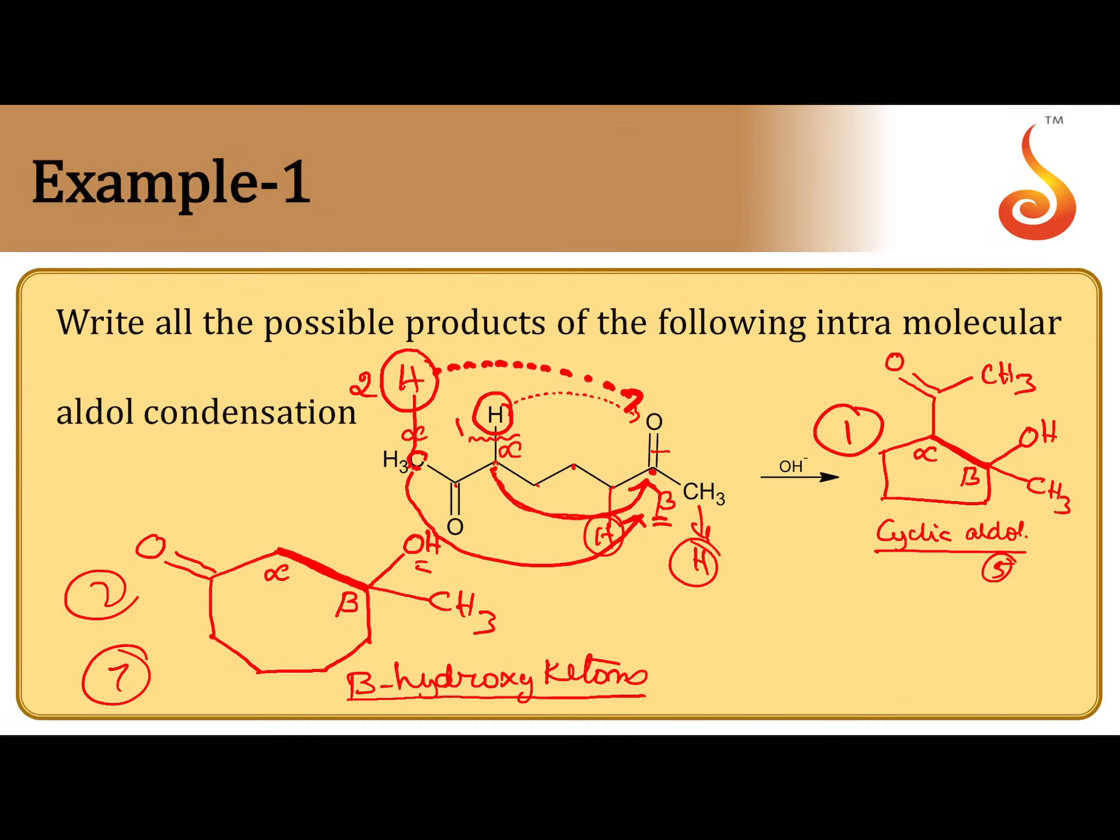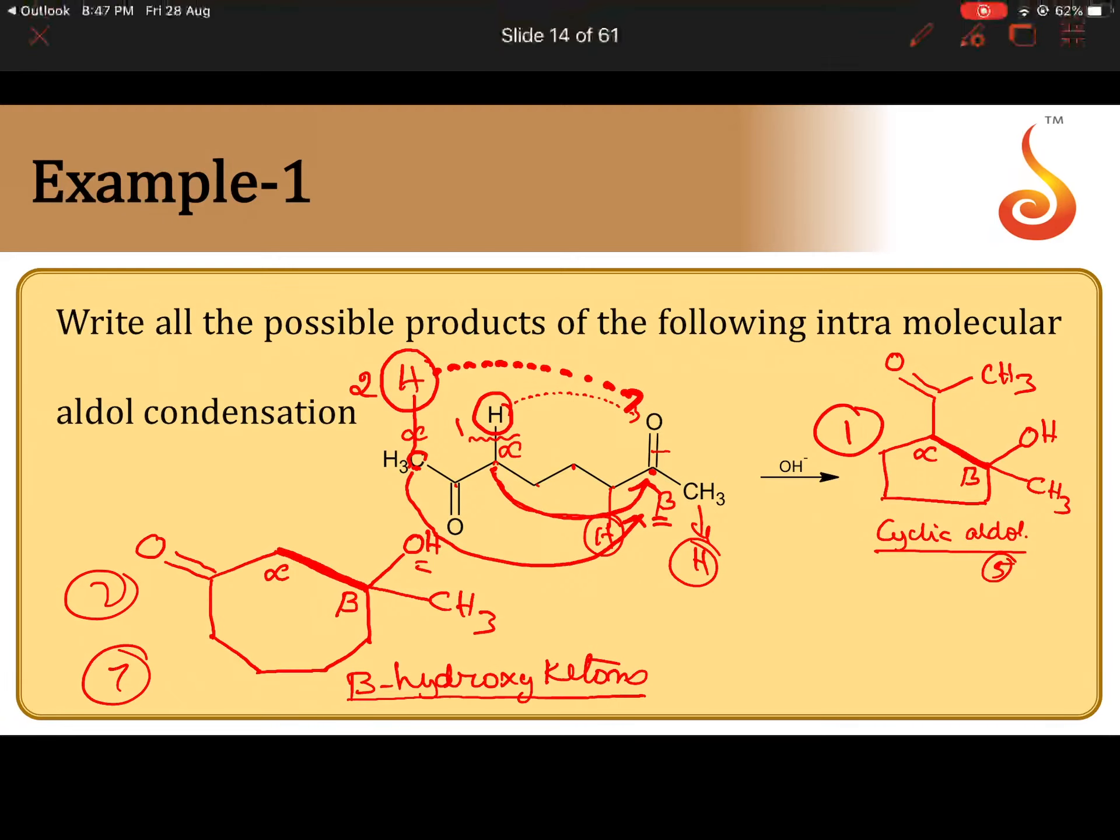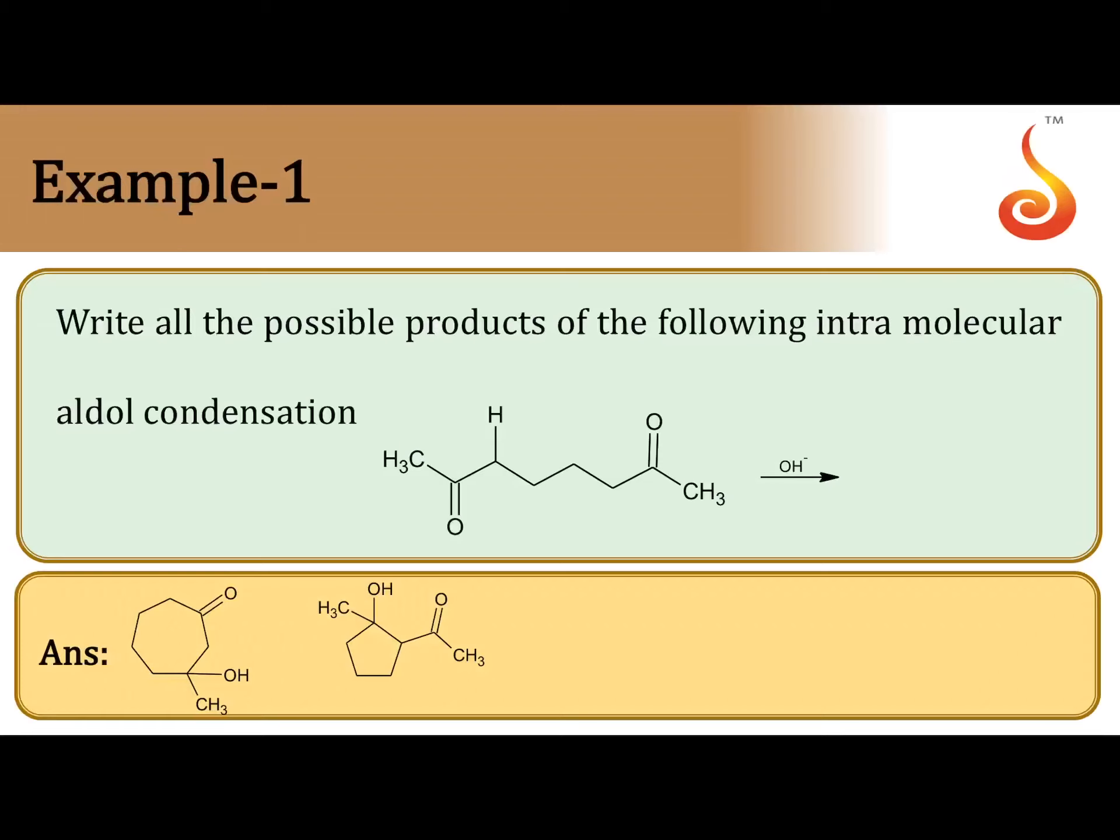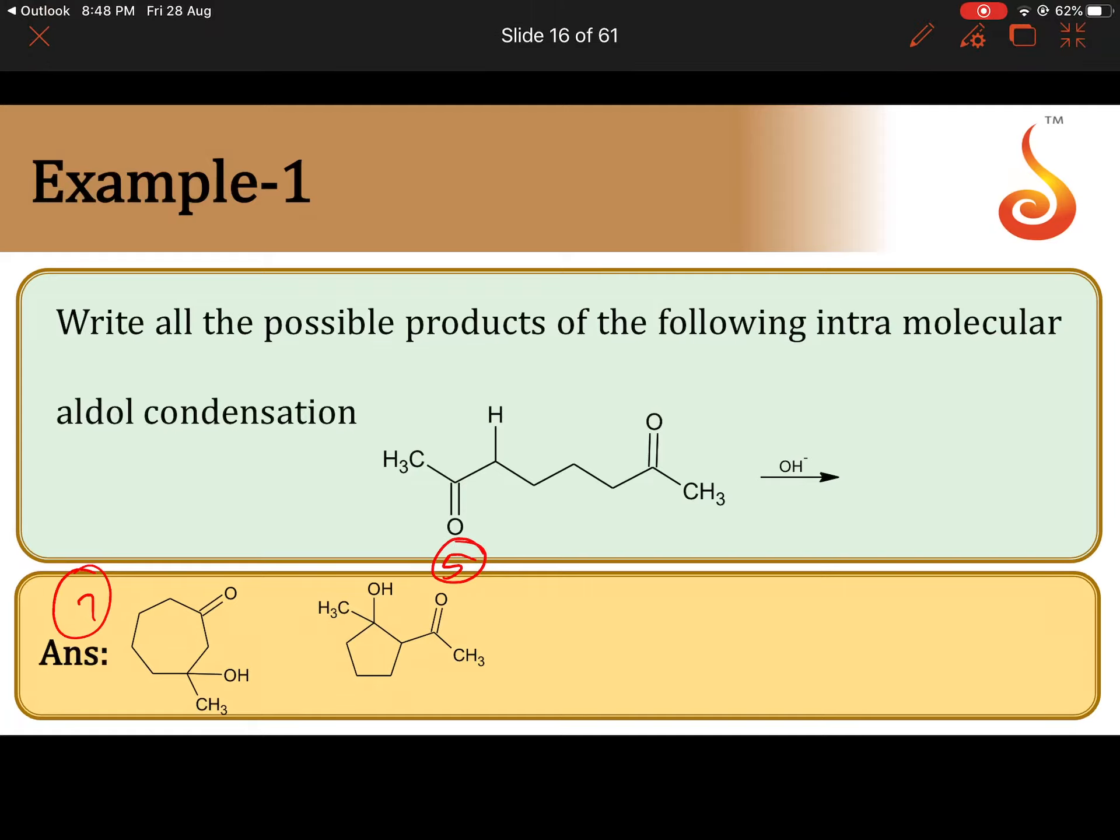One, two, you can get 2 products. See, this is 7-membered ring, this is 5-membered ring.